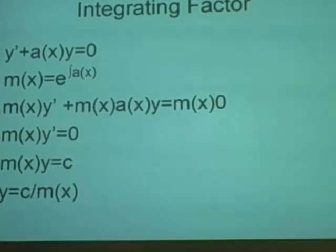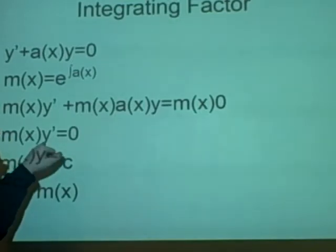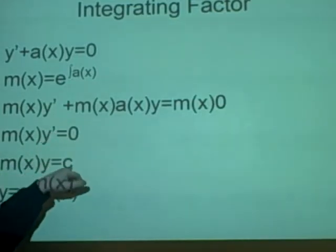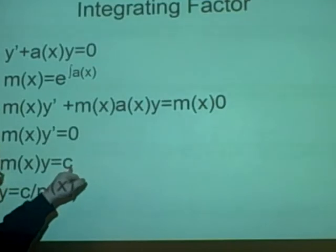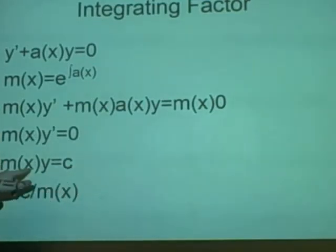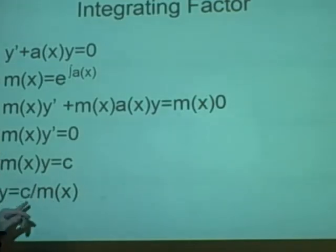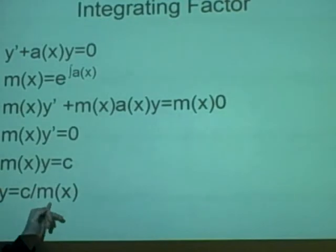Now, what we want to do, we want to finish with y on its own. So we integrate this because it's a differentiation at the moment with the y prime. And this will give us a c on this side as we're integrating. And m(x)y on this side. And we rearrange it to get y equals c over m(x).